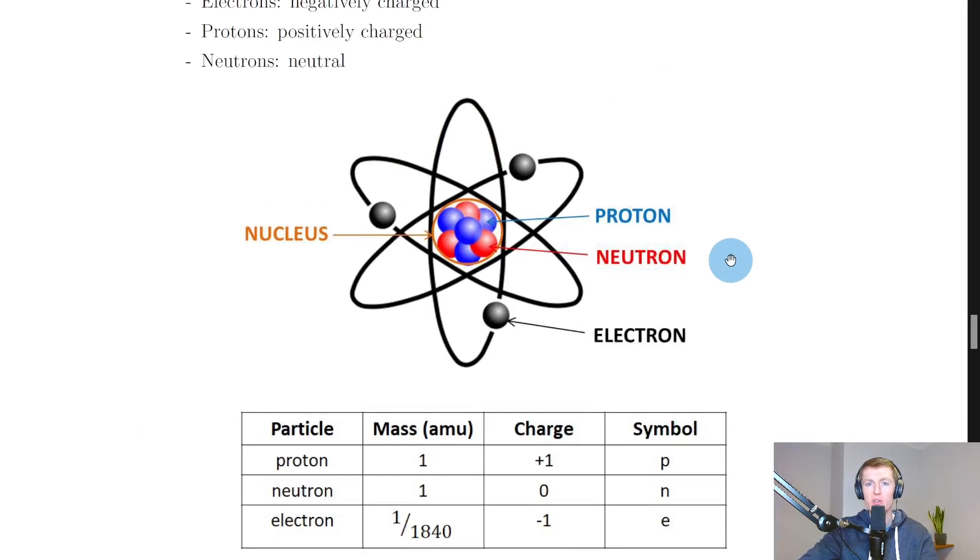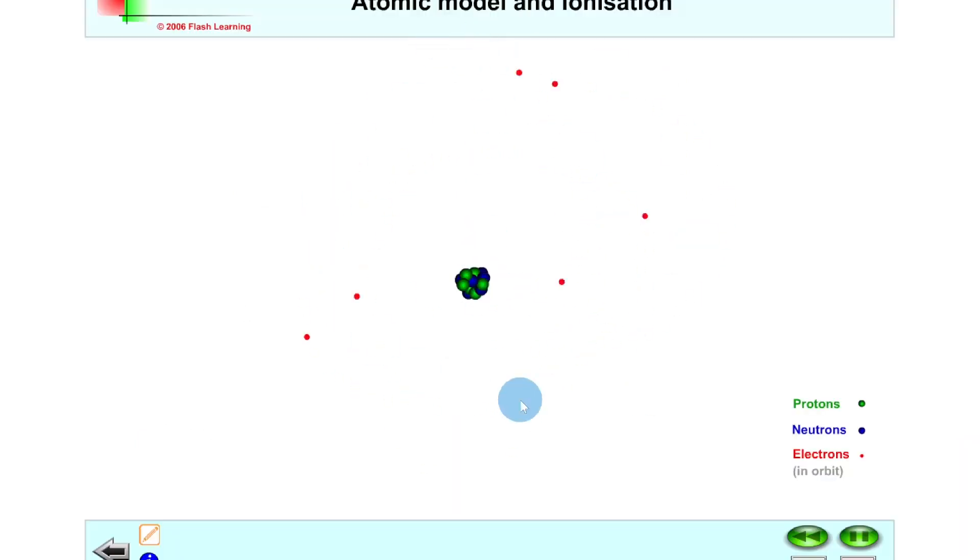This time we have an atomic model where the electrons are actually in movement, just to make it a bit easier for you to visualize. There's our nucleus in the middle, made up of protons and neutrons, and then we've got these electrons moving in different paths or orbitals around the nucleus of the atom.